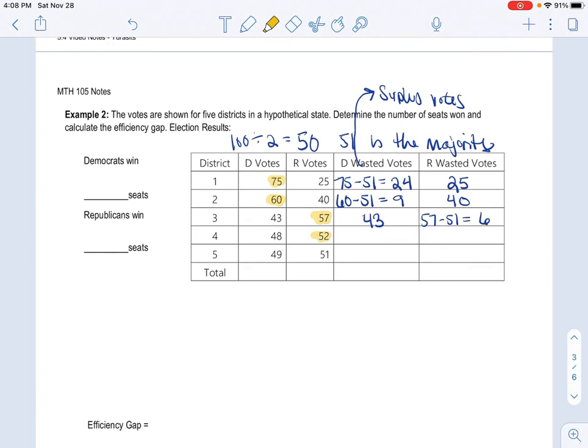District 4, the Republican won. And it looks like just one vote was wasted, where all 48 were wasted for the Democrat. And then our last district, well, we only got the 51, and that's all we needed. So none were wasted, but all 49 were wasted.